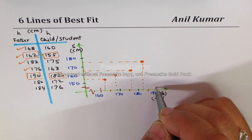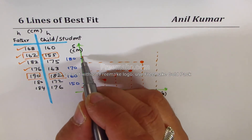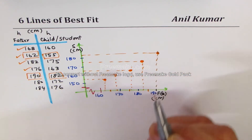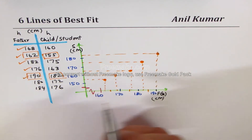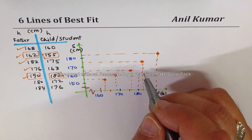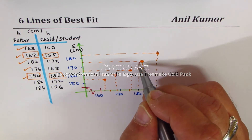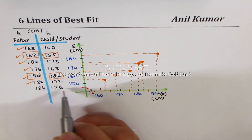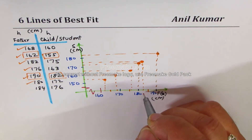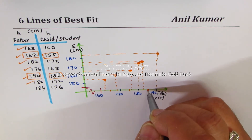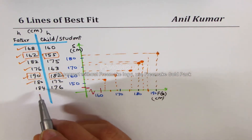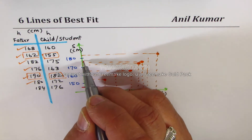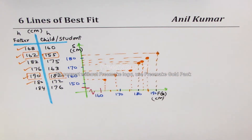The fifth point is 190/182: 190 is at the far end of the x-axis, and 182 is above 180, so we plot it. The sixth point is 180/172: go to 180 on x, then 172 on y — we get a point there. The last point is 184/176: 84 is midway between 180 and 190, and 176 is more than halfway on y. So these are all the points plotted from the given information.